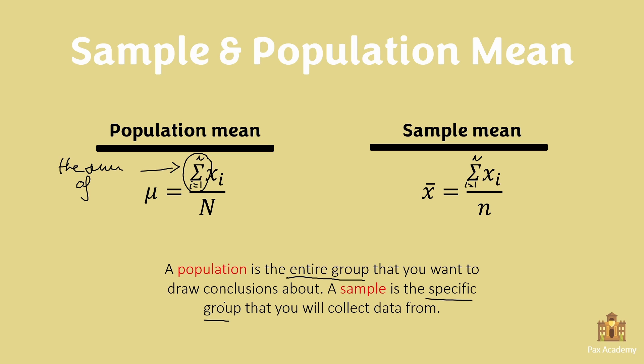Say, for instance, you want to calculate the mean temperature in a given month. Well, the population would be the amount of days in the month. A sample, on the other hand, would be some of the days from that month.